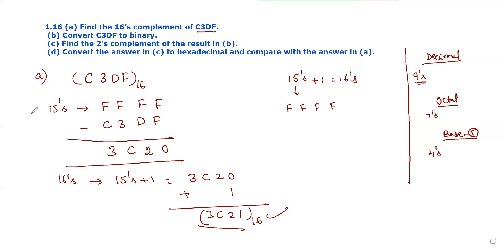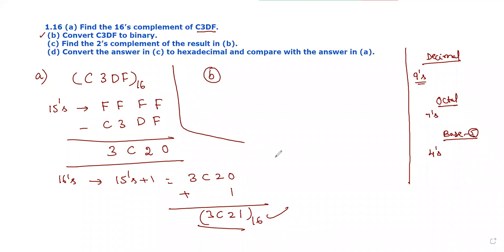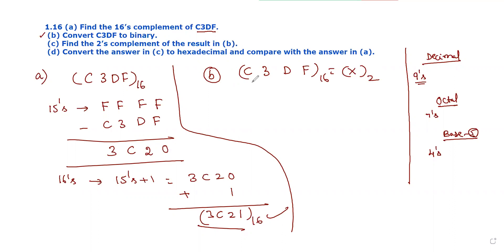This is the first bit answer. Next, second bit: convert C3DF to binary. To convert, we need to convert hexadecimal to binary. For each hexadecimal digit, assign 4 bits. C 3 D F — this is our hexadecimal number. We have to convert in terms of binary. C is 12, so write 12 in binary using 4 bits.